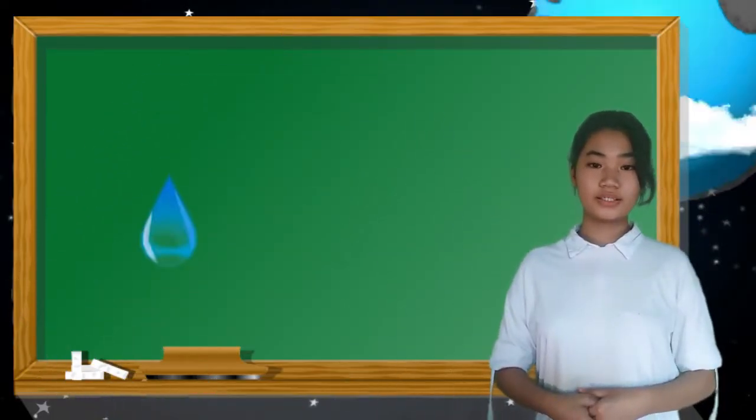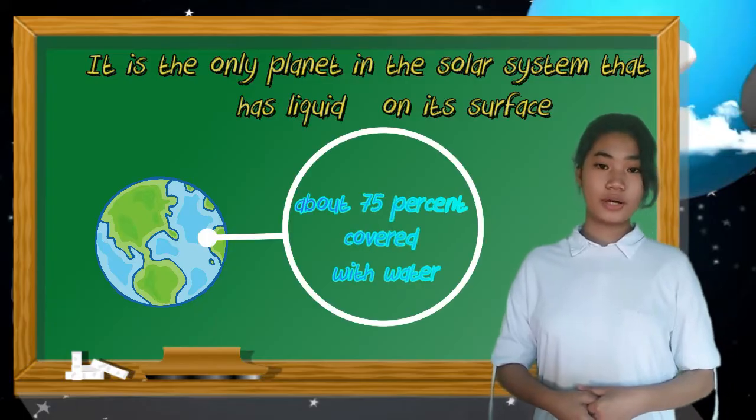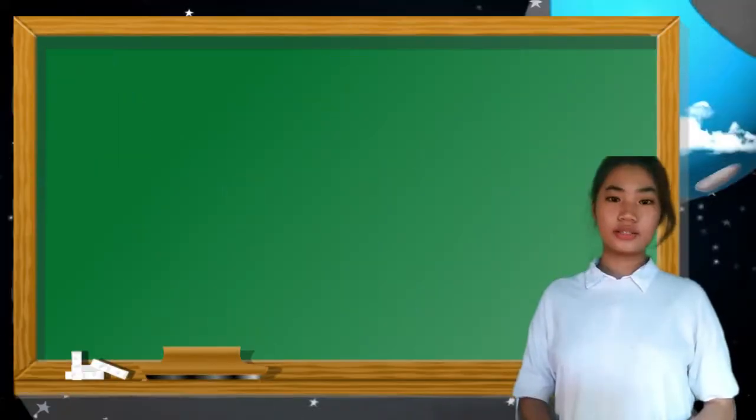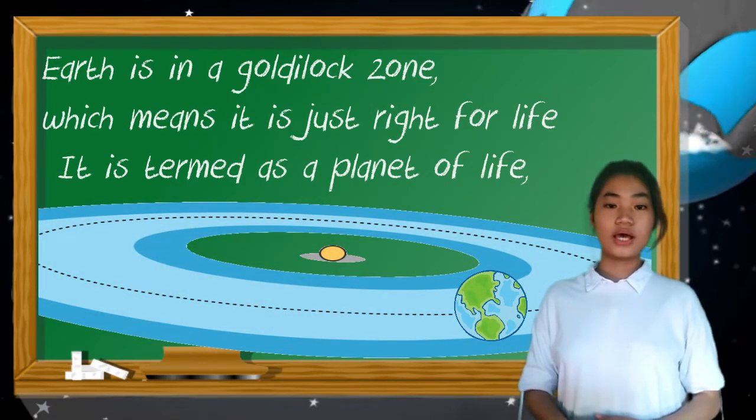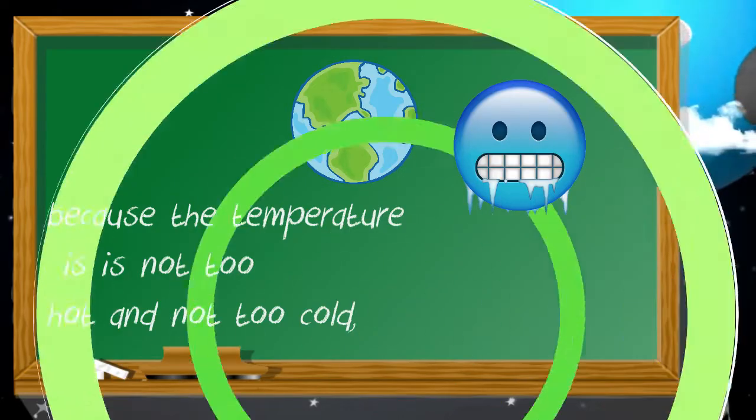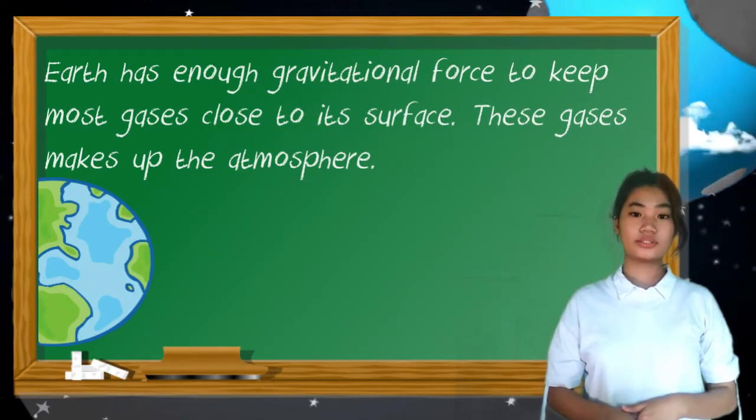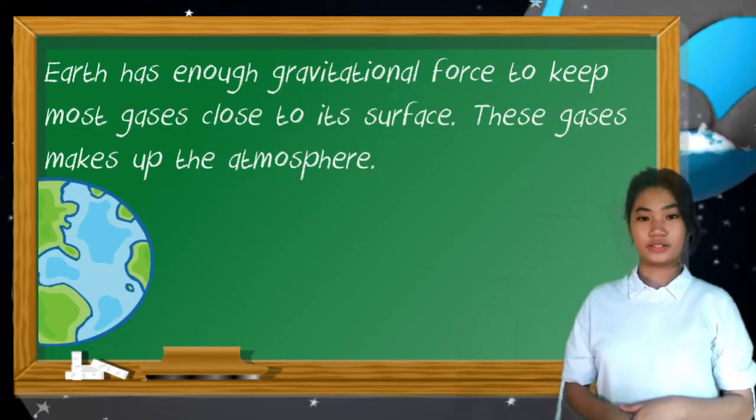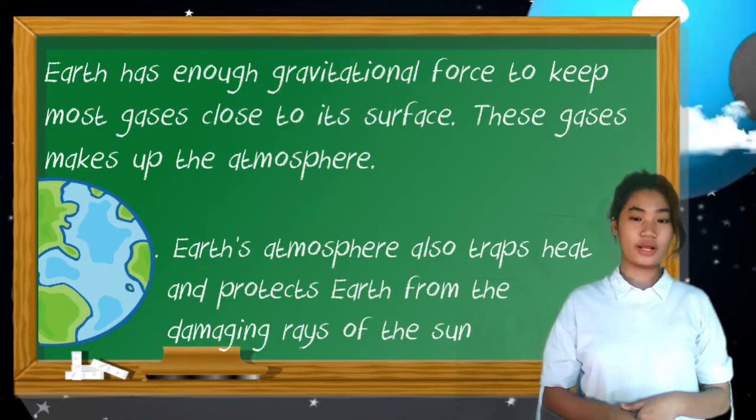The reason why our planet Earth is unique is because of these following characteristics. It is the only planet in the solar system that has liquid on its surface and it is covered about 75% with water. Earth is in a Goldilocks zone which means it is just right for life because the temperature is not too hot and not too cold. Earth has enough gravitational force to keep most gases close to its surface. These gases make up the atmosphere. Earth's atmosphere also traps heat and protects Earth from the damaging rays of the sun.